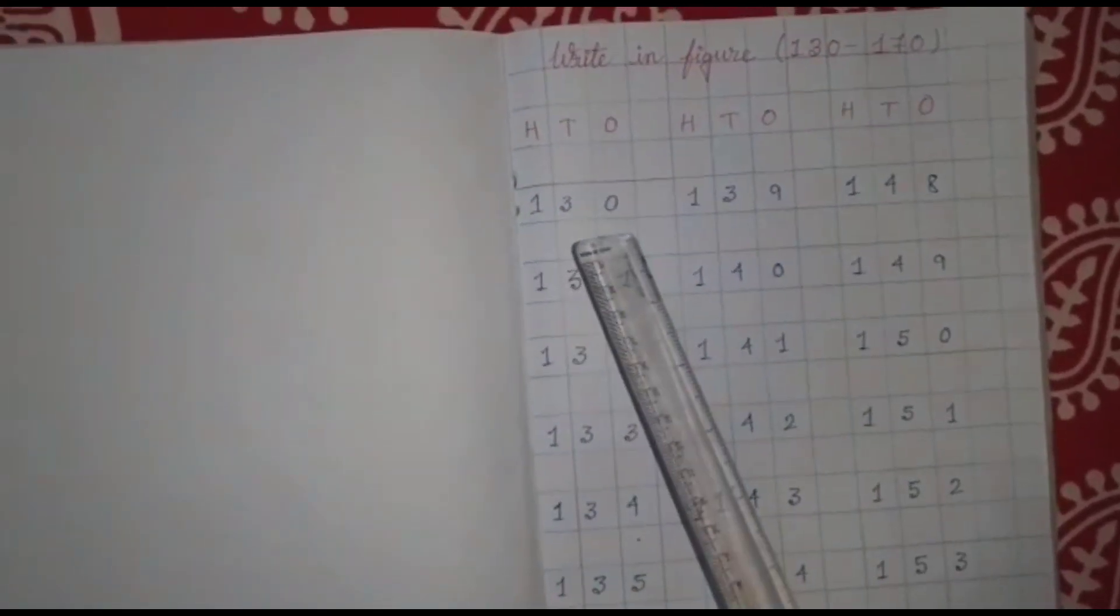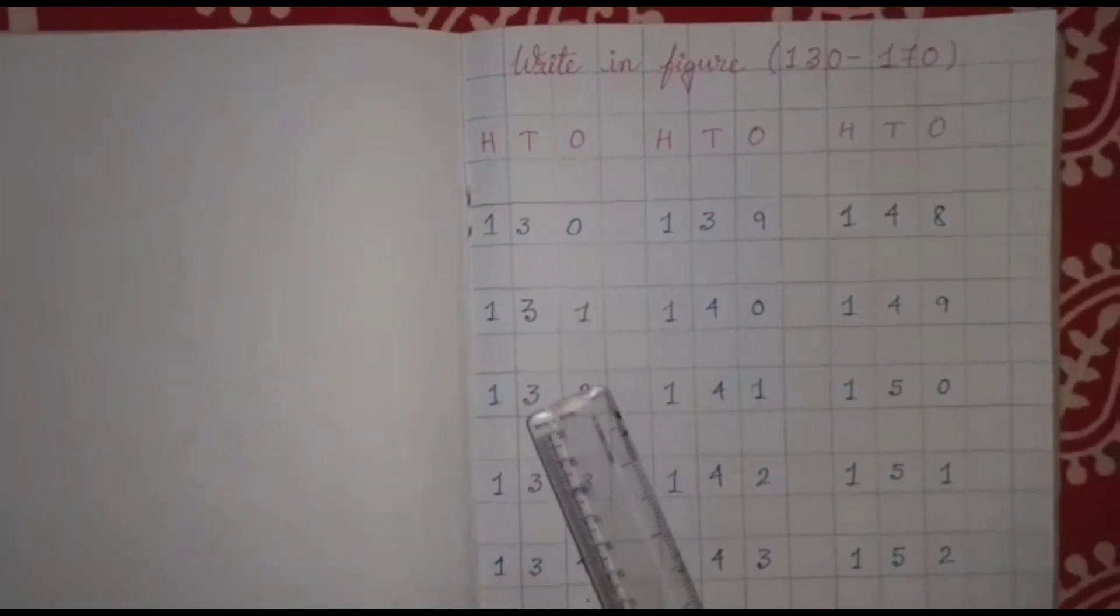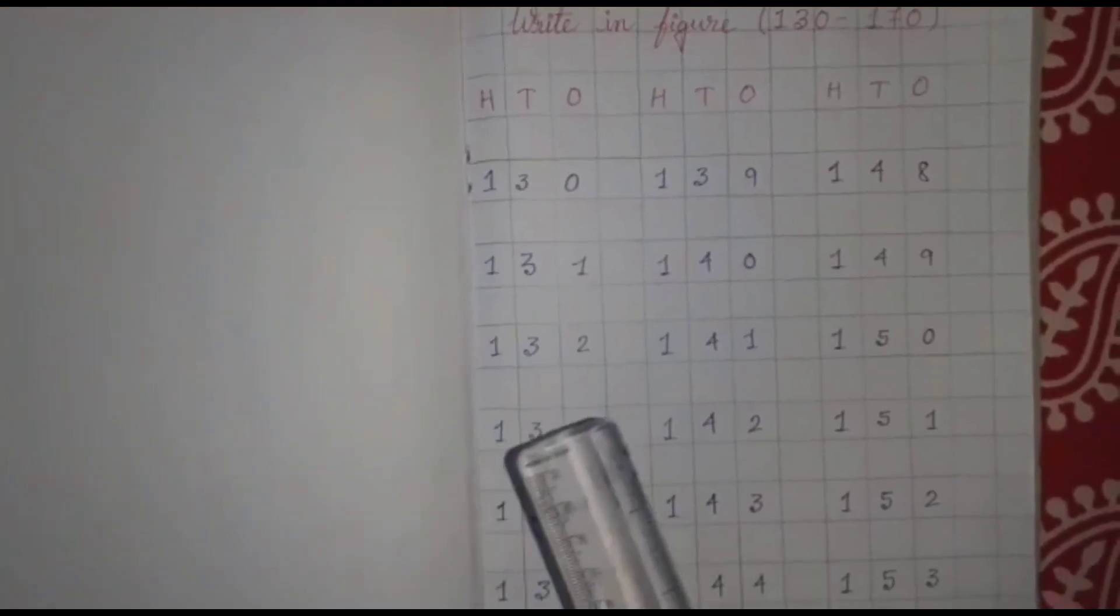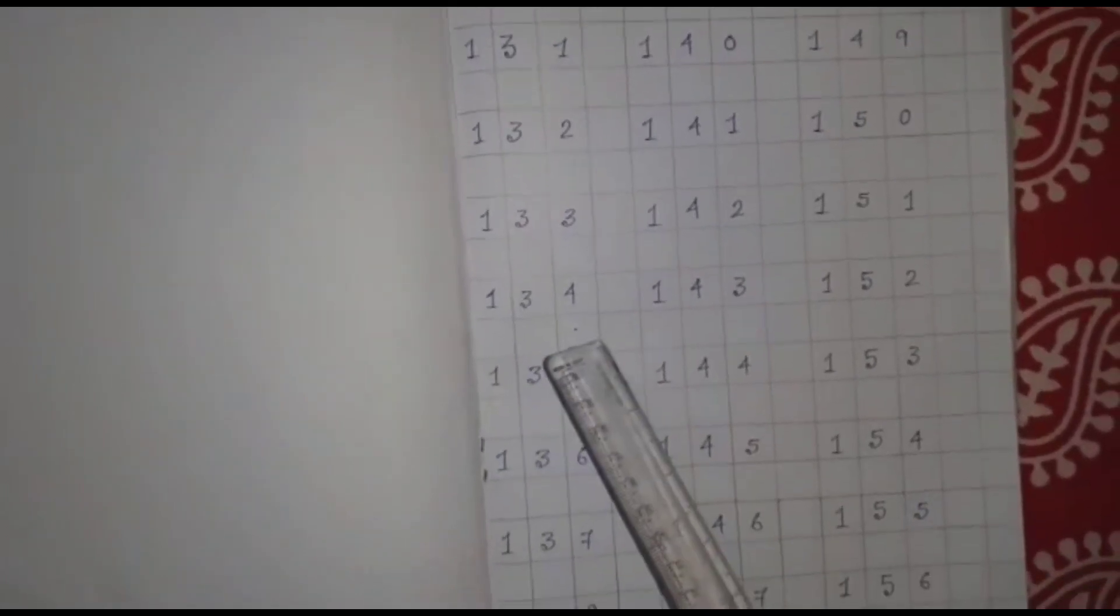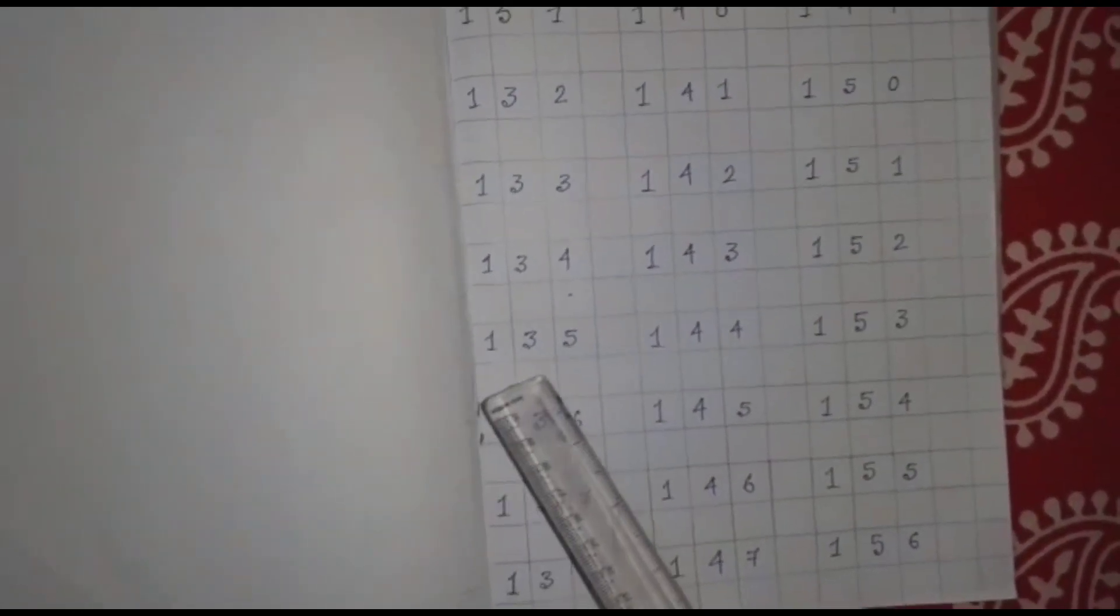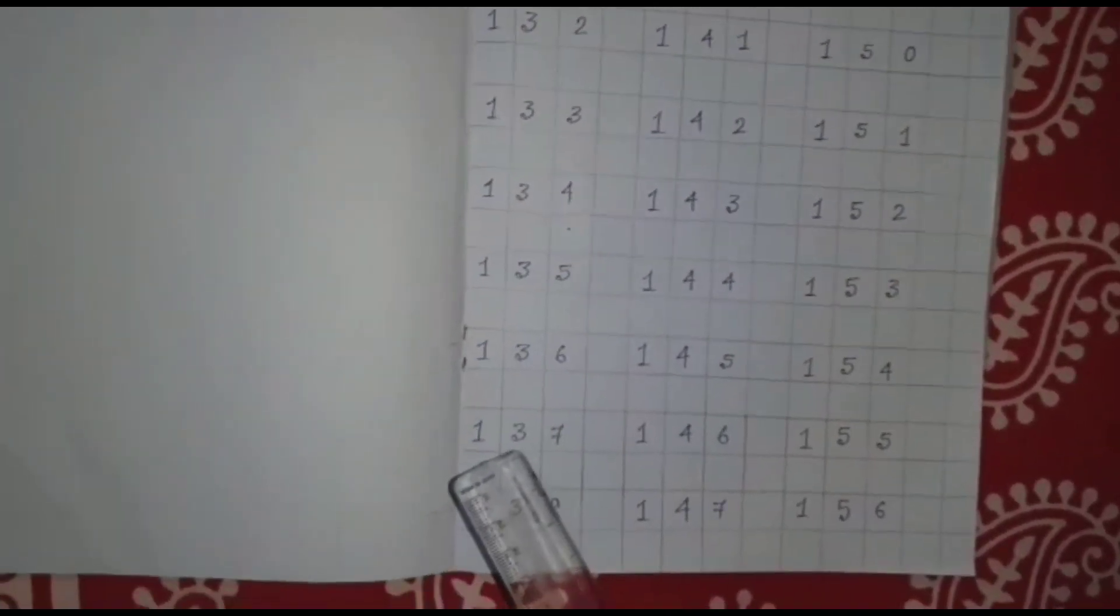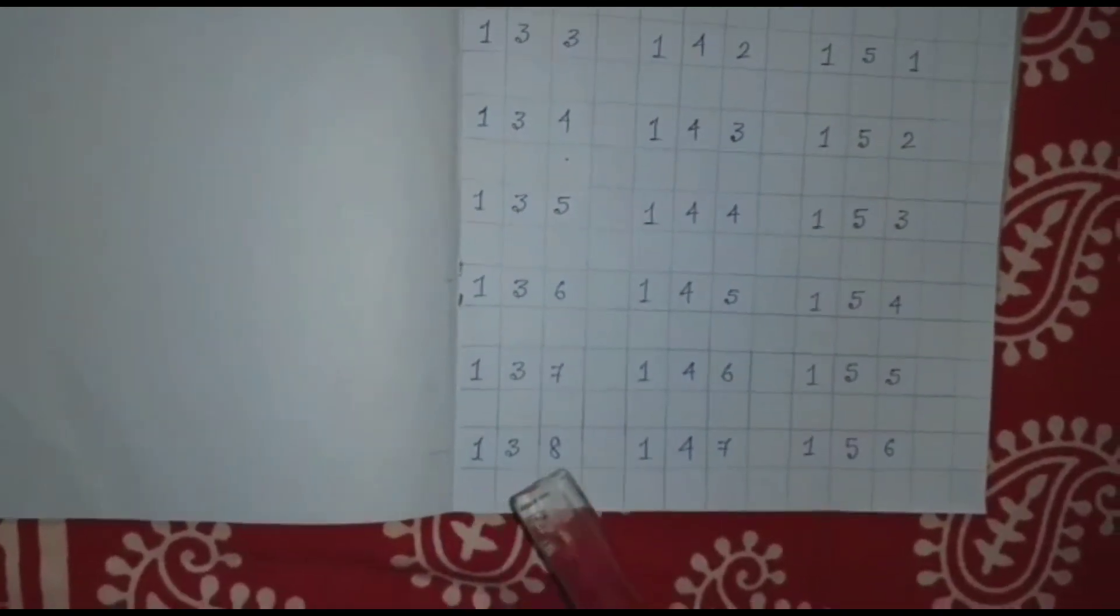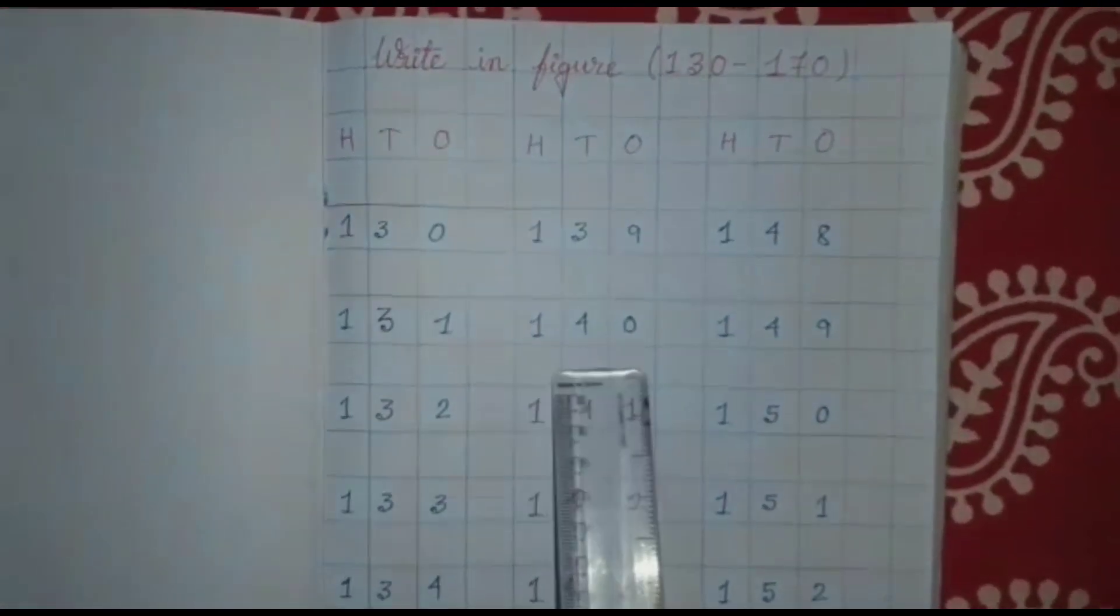130, 130. Then you will give one box gap. Then again you will write 131, 131. 132, 132. 133, 133. 134, 134. 1, 3, 5, 135. 1, 3, 6, 136. 1, 3, 7, 137. 1, 3, 8, 138. 1, 3, 9, 139. 1, 4, 0, 140.